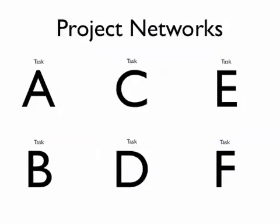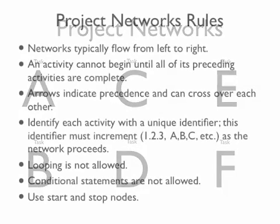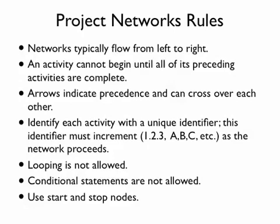To go from a list of tasks or work packages to an actual project network, there are a number of rules to follow. The network flows from left to right. An activity can't begin until all of its preceding activities are completed, and arrows indicate precedence. Each task is identified with a unique identifier that increments logically — for example, task 10 comes after task 1 and before task 20. Looping is not allowed, tasks cannot be repeated, conditional statements such as ifs and ors are not allowed, and we use start and stop nodes.